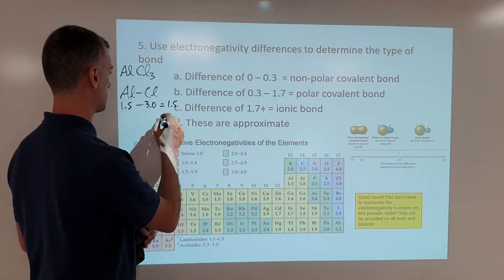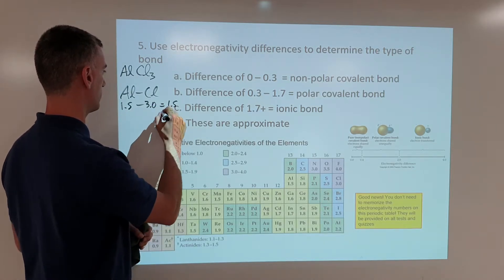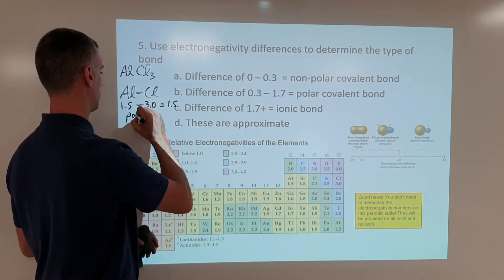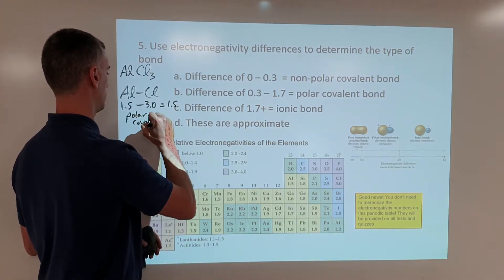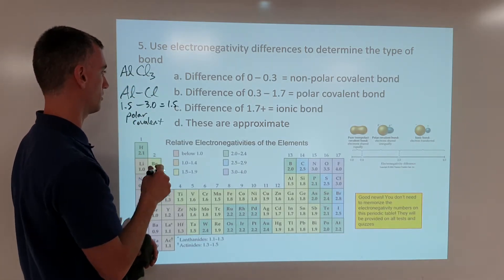which is... let's see, 1.5 minus 3.0, that's... sorry, I don't want to say ionic. That's a polar covalent bond. Metal and nonmetal make a polar covalent bond. These things can happen.